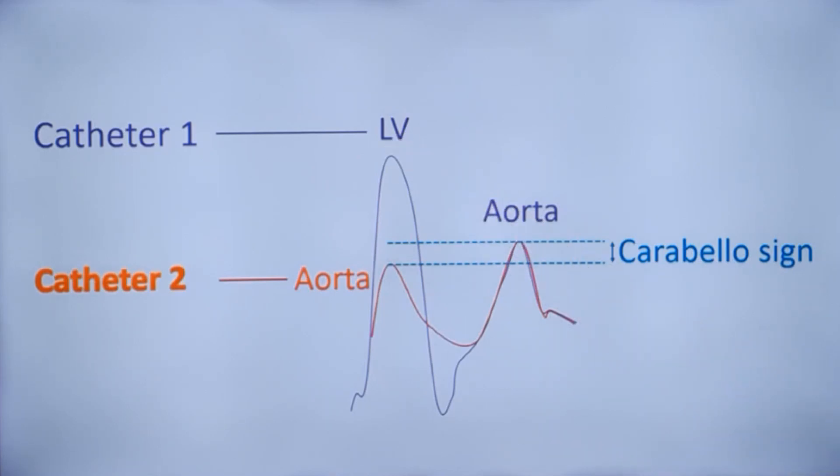This is the left ventricle pressure. When the left ventricle catheter is pulled out into the aorta, there will be a difference in the pressure. That is known as Carabello sign.